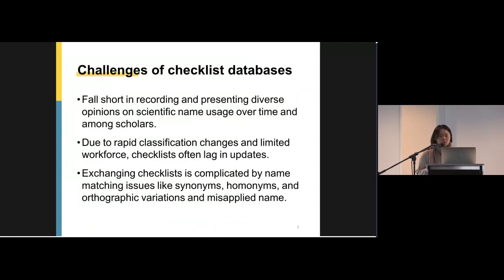Here are some issues or challenges we have encountered. Number one, we probably fall short in recording and presenting diverse opinions on species over time and among different scholars. Number two, due to the rapidity of classification changes and limited workforce for database maintenance, checklists usually cannot be updated promptly. Number three, exchanging checklists poses a complex challenge such as name matching for synonym, homonym, orthographic variations, and misapplied name. Even matched to a name, we still don't know if it is the same taxon.